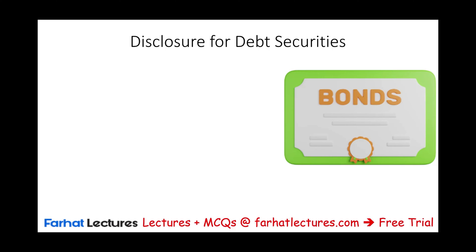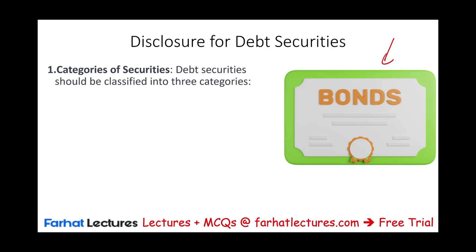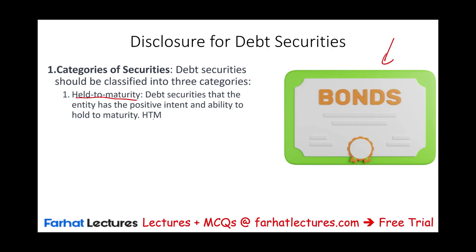Starting with disclosures for debt securities. When we think of debt securities, think of bonds — it doesn't have to be bonds, we could have loans as an investment, but bonds is typically what we think of. The first thing we have to do is list the categories. We could have three categories under debt securities. The first is Held to Maturity, or HTM — securities that we intend to hold and have the ability to hold, reported at amortized cost, not at fair value.